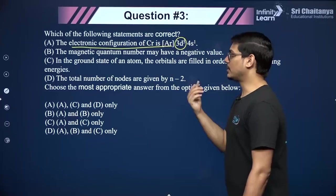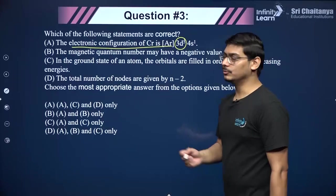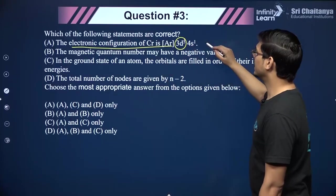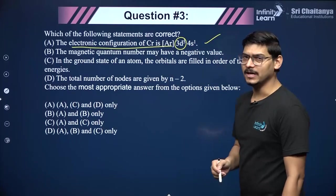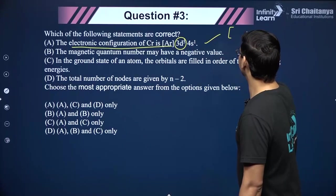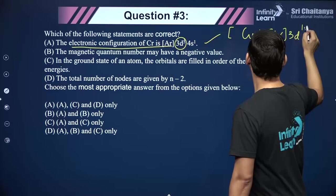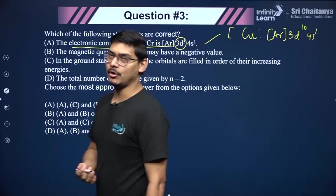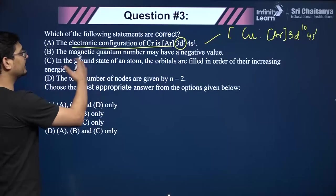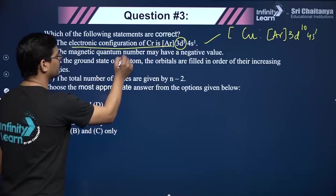We know that due to the extra stability of a half-filled d subshell, the electronic configuration of chromium is an exception: instead of 3d⁴4s², it is 3d⁵4s¹. Another exception in the 3d series is copper: [Ar] 3d¹⁰4s¹. There are some important exceptions to electronic configuration which you should know.